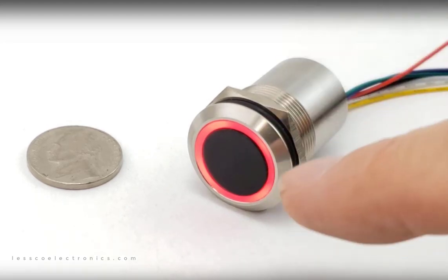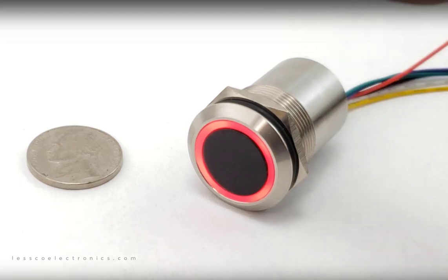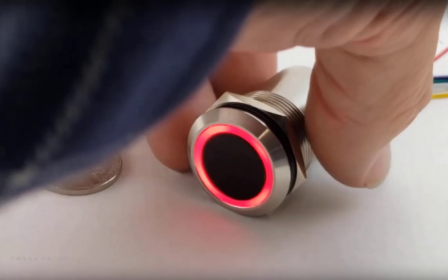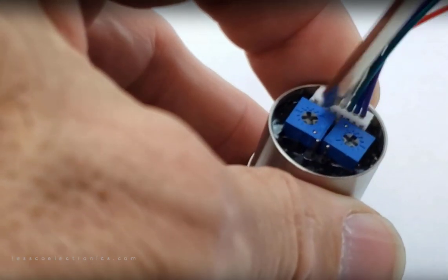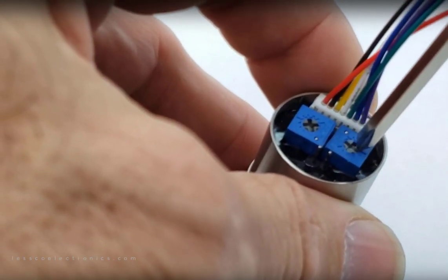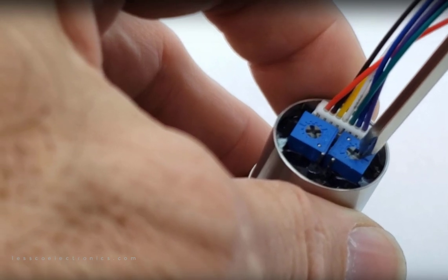To change the mode from momentary to toggle on off, what we have to do is go to the back of the unit where we have two potentiometers. This one adjusts the range from two to eight inches.